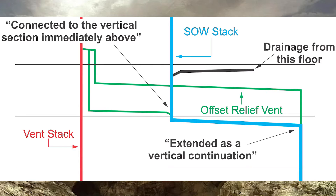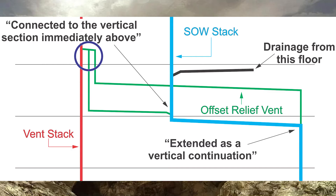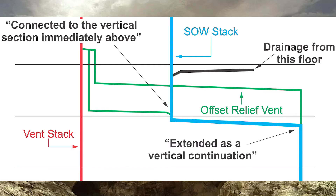The last part is extended as a vertical continuation of the lower section. If I had a Y and that offset relief vent comes straight out of the top of it, and then my offset comes off the side — that's exactly what they're talking about here. Now, a clarification: you might be wondering why I've taken that offset relief vent and tied it together above the floor line. If you look to the right, you'll see the drainage from this floor — I need to be above the flood level rim of that. So that's why I brought it up there. That is code.